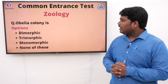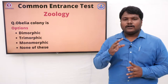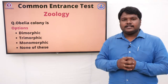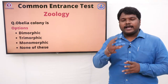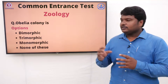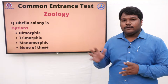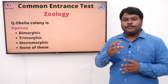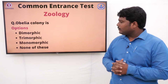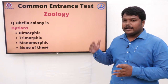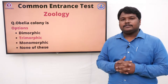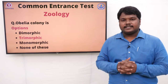Question 16: Obelia colony is. Colony means a group of living organisms staying at one place — if bacteria colony means some group of bacteria are staying at one place, in the same way the colony of Obelia is called. Options: A) Dimorphic, B) Trimorphic, C) Monomorphic, D) None. The right answer is Trimorphic, meaning it has three types of morphological forms.